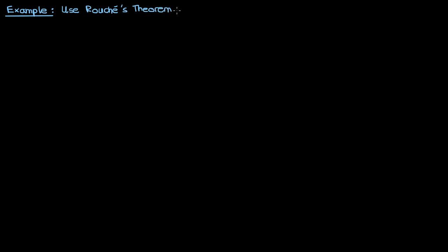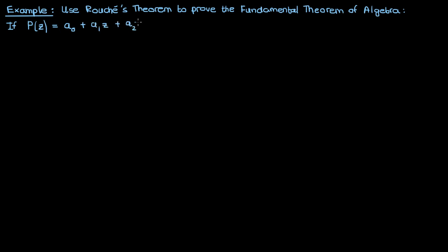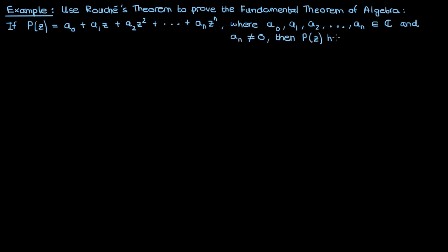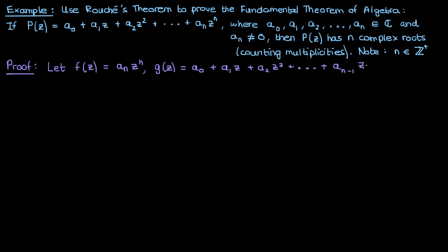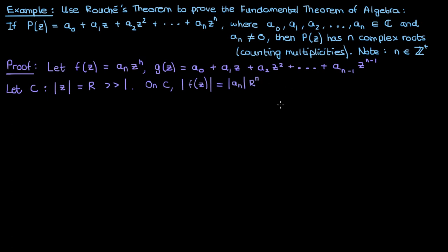Let's solve an example involving Rouché's theorem: using it to prove the fundamental theorem of algebra. The fundamental theorem of algebra states that a polynomial p(z) of degree n with complex coefficients has n complex roots counting multiplicities, where n is a positive integer. To prove this, we set f equal to the leading term a_n · z^n and g equal to every other term of the polynomial. We let the simple closed contour C be a circle with a very large radius R. On this circle, the modulus of f(z) is just |a_n| times R^n.